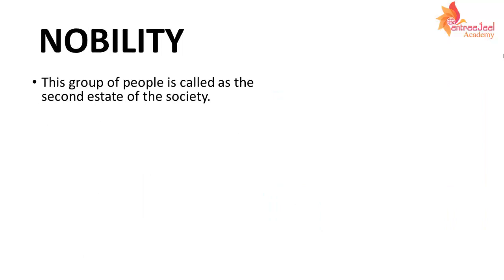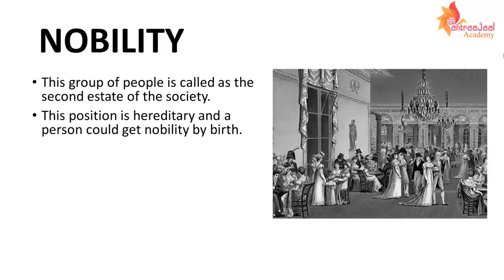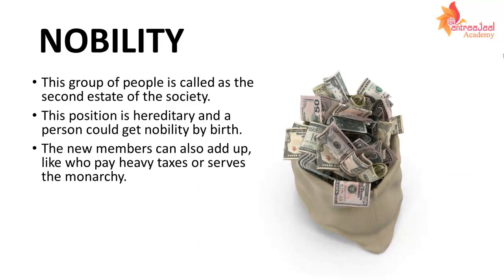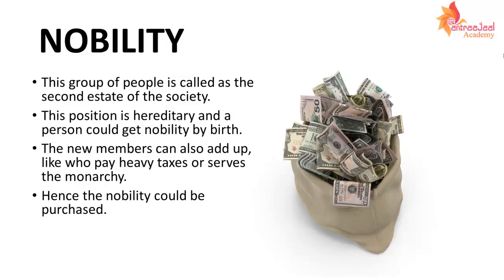Second state थी nobility। ये position hereditary होती थी, यानि की person could get nobility by birth। या फिर नए members भी add हो सकते थे अगर वो एक बार में बहुत सारा tax pay करते, या फिर राजा को अच्छे से serve करें। Hence, the nobility could be purchased। And further, they don't have to pay taxes.